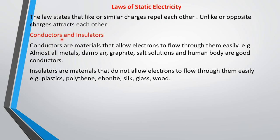Now we know that some materials allow electrons to flow through them while others do not. Materials that allow electrons to flow through them easily are called conductors — examples include damp air, graphite, salt solutions, and the human body. Those that will not allow electrons to flow through them easily are called insulators — examples include plastic, polythene, ebonite, glass, and wood.